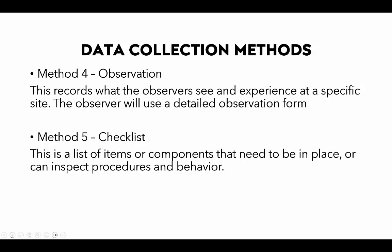Finally, the fifth method — last but not least — is the checklist. A checklist is a list of items or components that need to be in place, and it can be used to inspect procedures and behavior. Essentially, you go into the field with a form that has certain standards, and you tick yes if you find what you're looking for, or no if you don't.